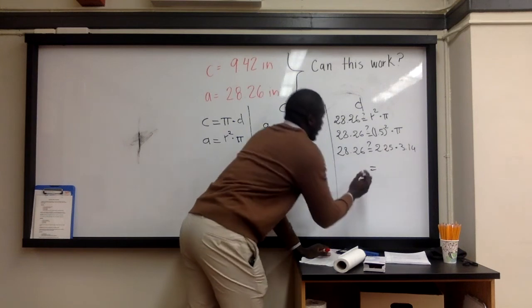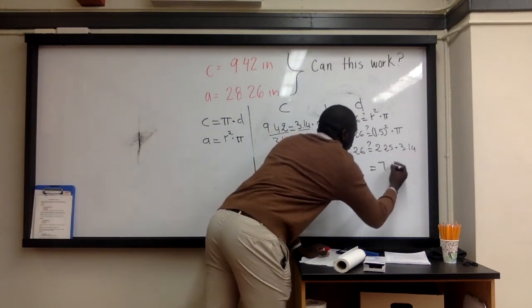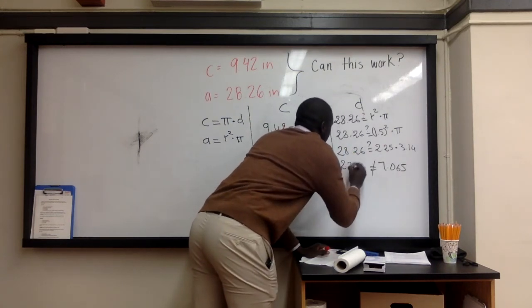Now we need to find the value of this side. So 2.25 times 3.14 is simply 7.065, which is different from 28.26.